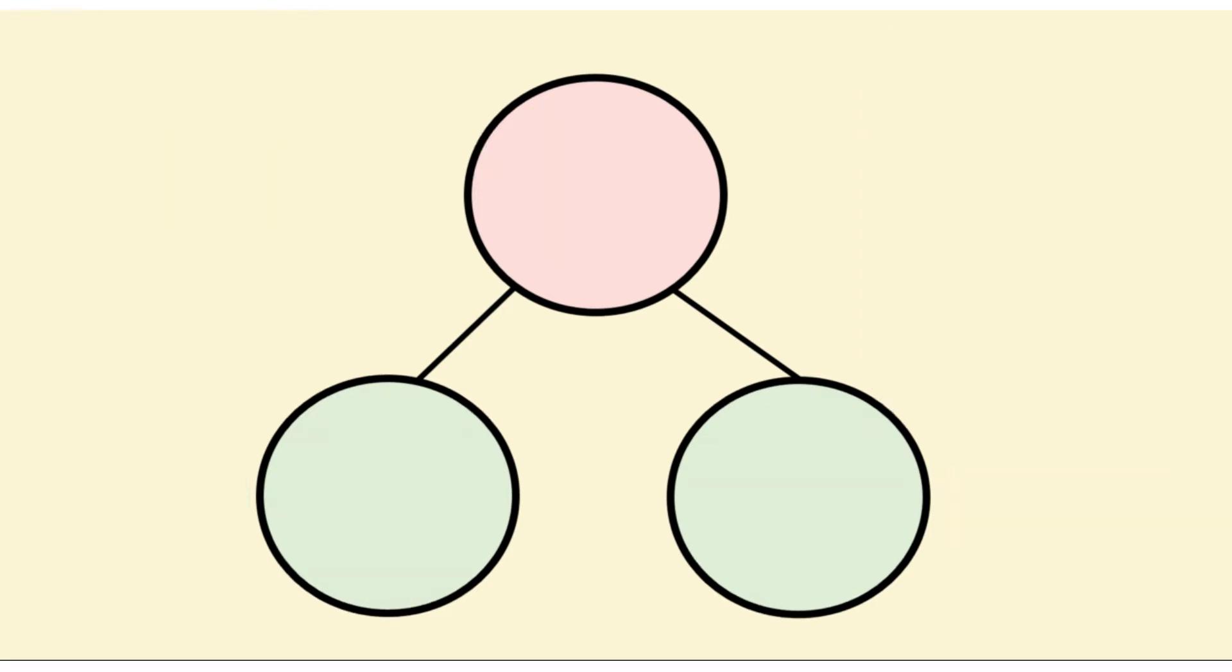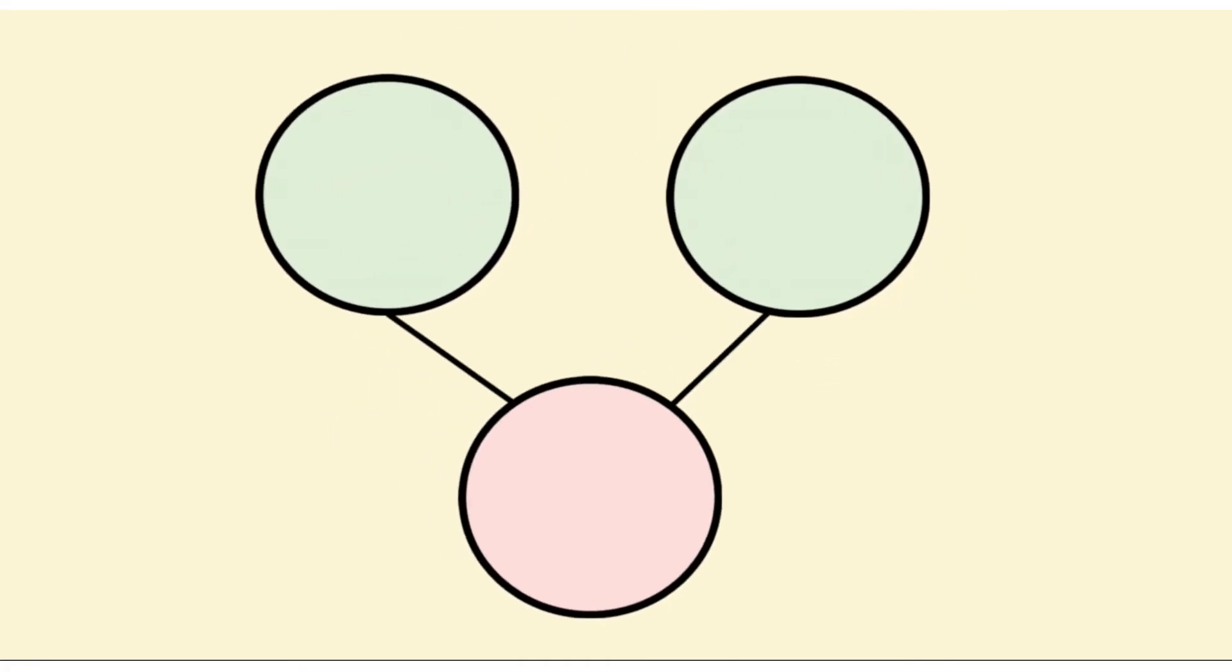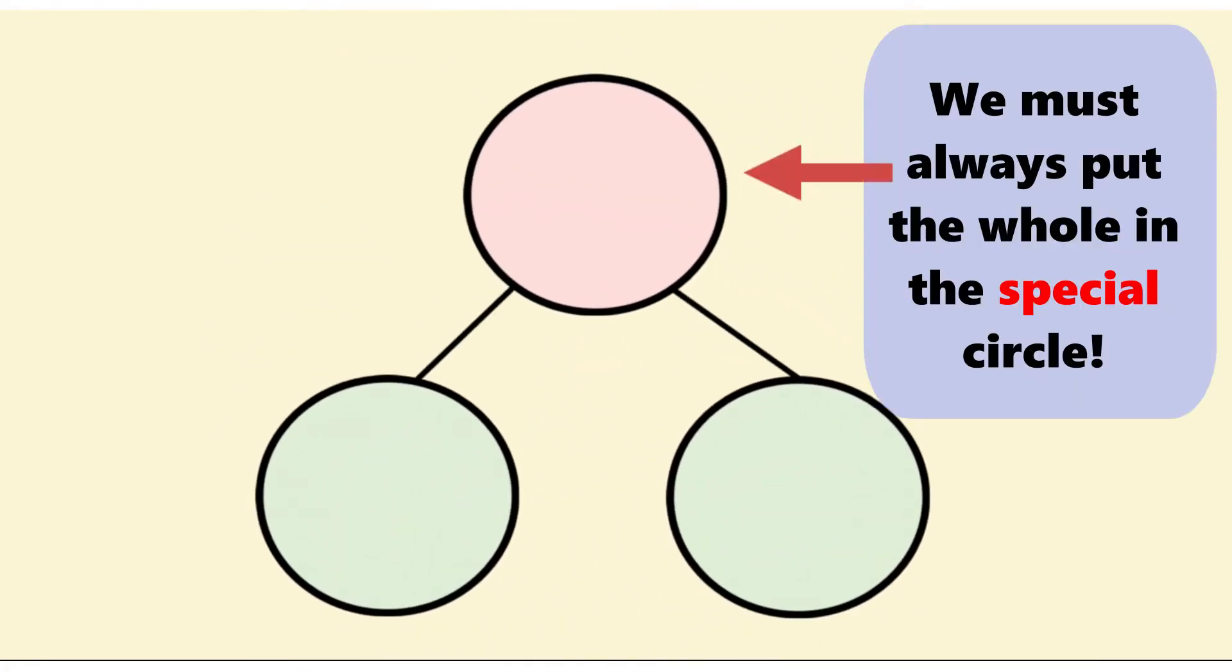Number bonds can be turned around and used in any direction. But the whole must always be placed in that special circle with two lines coming out from it.